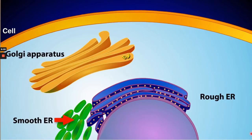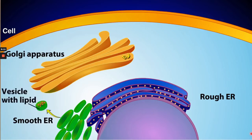The smooth endoplasmic reticulum, or smooth ER, lacks ribosomes on its surface — that is why it is called smooth. The smooth ER is mainly responsible for the detoxification of harmful chemicals. It is also responsible for the production of lipids, which are also packaged into transport vesicles and sent to the Golgi apparatus.